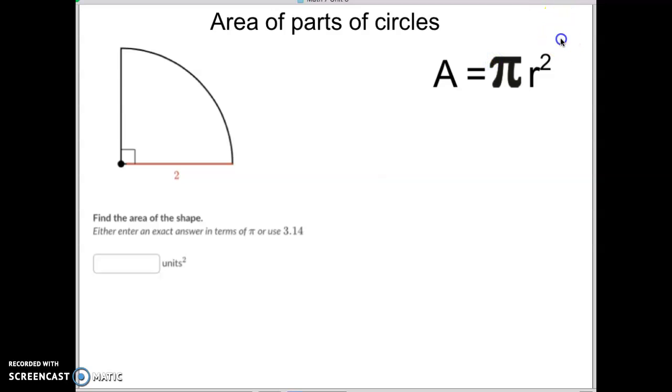So again, just reminding you, here is our area formula: area equals pi times the radius squared. We always got to have the radius, and in this case we do. So if you look at this one, our radius is 2 right here. So we just plug in area equals pi times the radius squared.